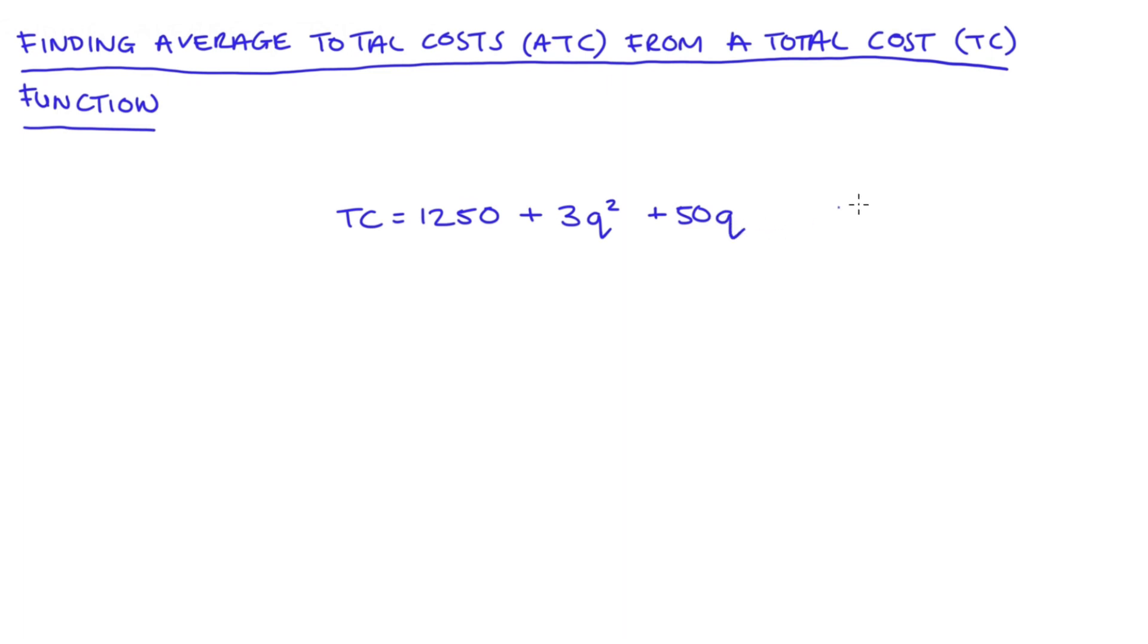Now the formula for average total cost is pretty easy. I'm just taking total costs TC and I'm dividing that by the quantity that the firm produces which is q.